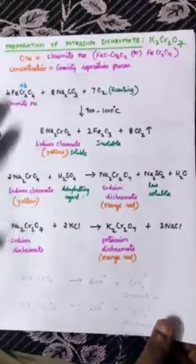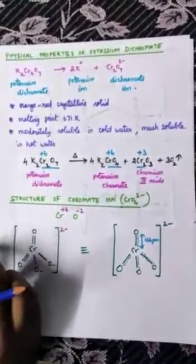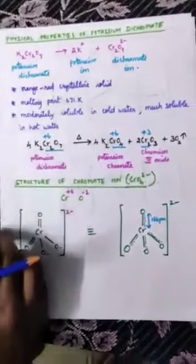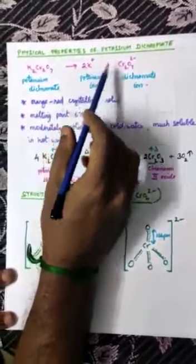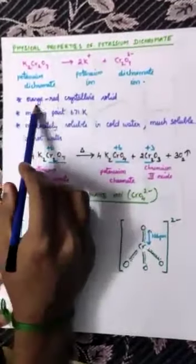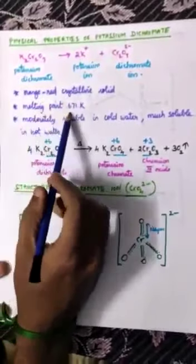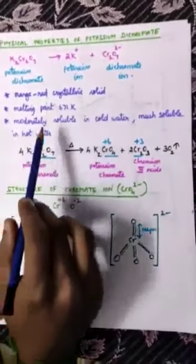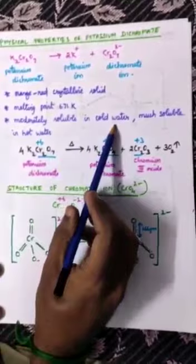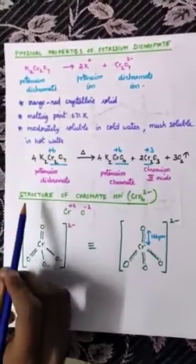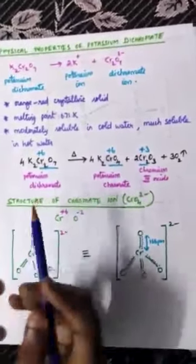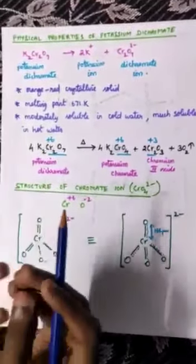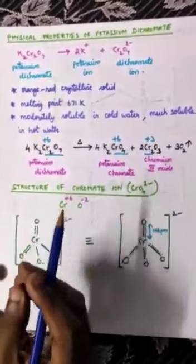That is the method to prepare potassium dichromate. Coming to the physical properties: potassium dichromate ionizes to form potassium ion and dichromate ion. It is an orange-red crystalline solid with a melting point of 671 Kelvin. It is moderately soluble in cold water but much more soluble in hot water.